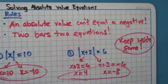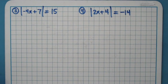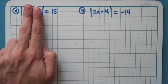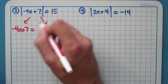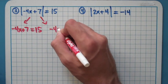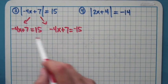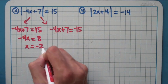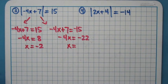I have two more problems. On the next one, try pausing the video to see if you can figure it out. The setup is the same: the thing inside the absolute value could either be 15 or negative 15 — that's the only way you take the absolute value and get 15. So I'll break it into two equations: thing on inside equals 15, or thing on inside equals negative 15. Solving both gives x equals negative 2 for the first, and x equals 5.5 for the second. Those are the two solutions.